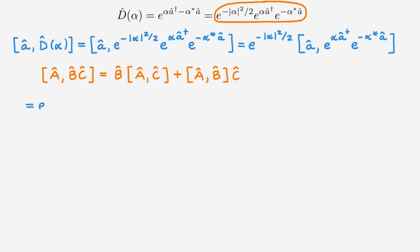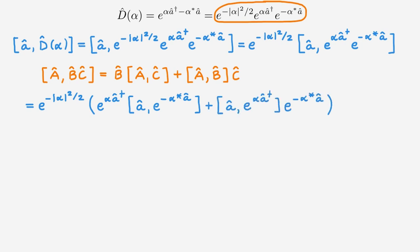Using this formula, we get the scalar exponential and then the first term plus the second term. From the video on functions of operators, we know that any operator commutes with a function of itself, so this first commutator vanishes — simply because any operator commutes with a power of itself.